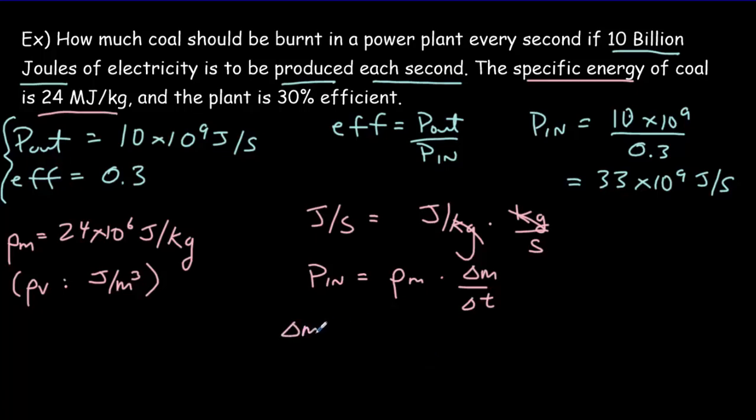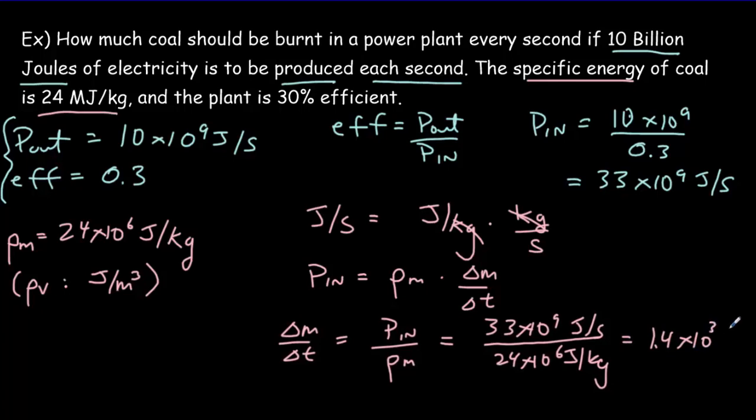If I rearrange that, the rate at which the mass is combusted is going to equal my input power divided by the energy density. Input power was that 33 times 10 to the ninth joules per second. Energy density was the 24 times 10 to the sixth joules per kilogram. If I divide that, I get 1.4 times 10 to the third kilograms every second. So we're going to have to combust 1,400 kilograms of fuel every second in order to produce this 10 gigawatts of power.